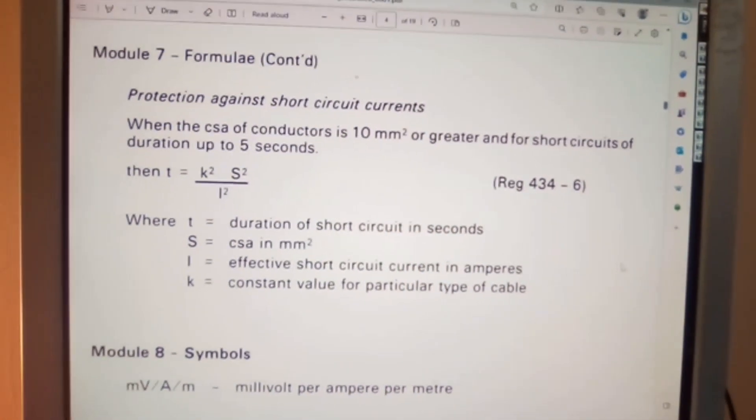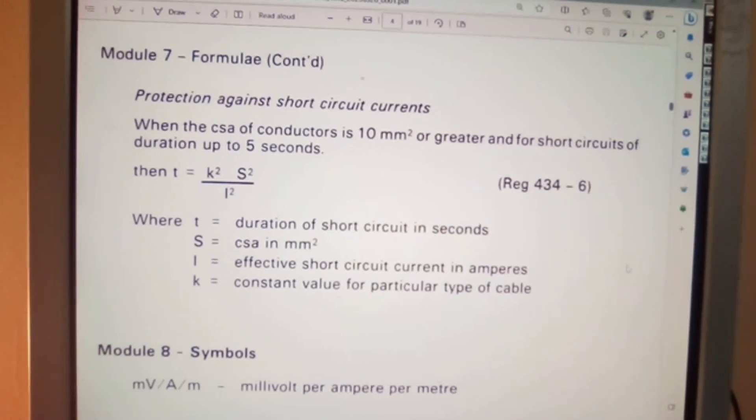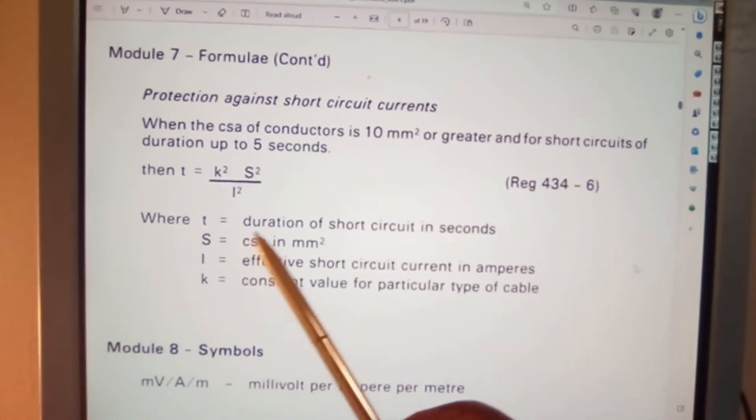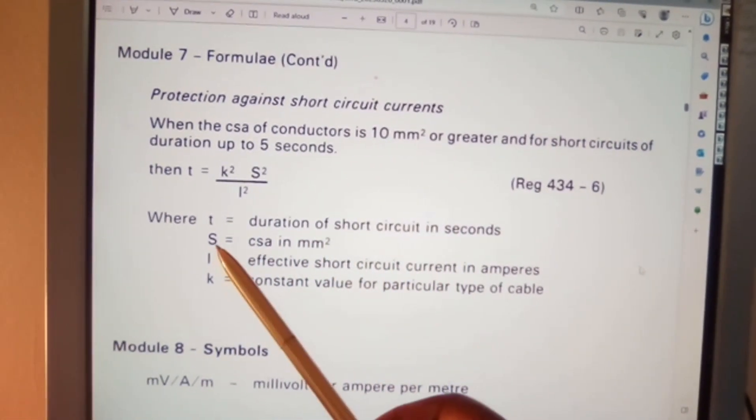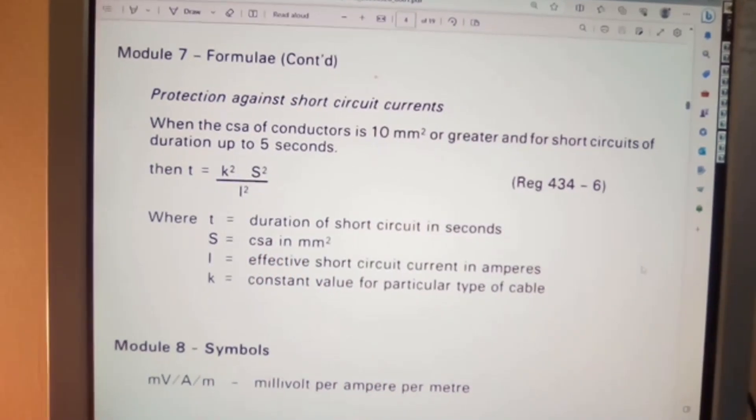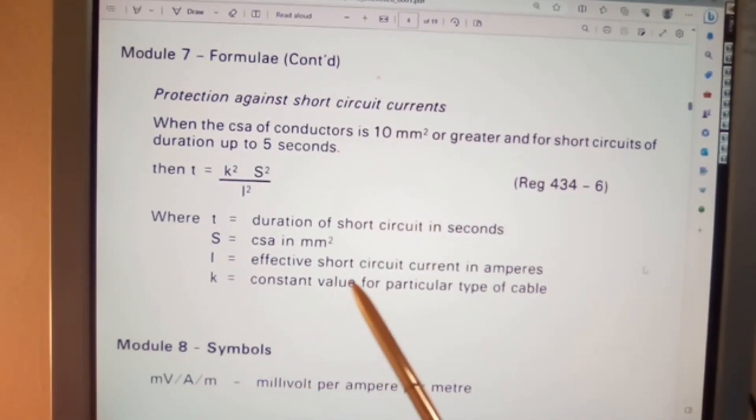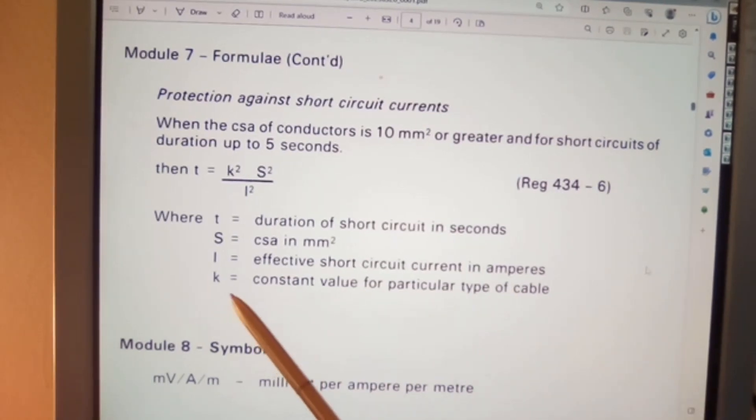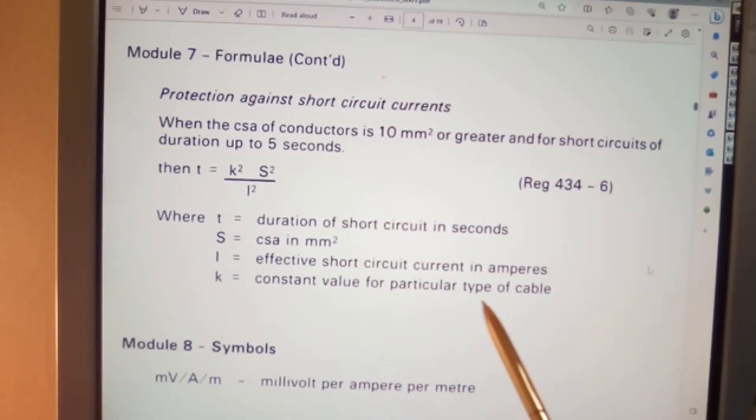Where T equals the duration of short circuit in seconds, S equals cross-sectional area in millimeter square, I equals effective short circuit current in amperes, K equals constant value for a particular type of cable.